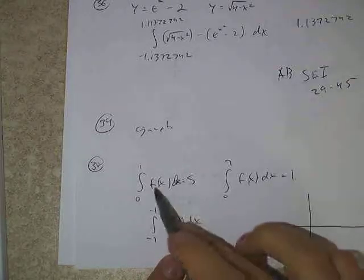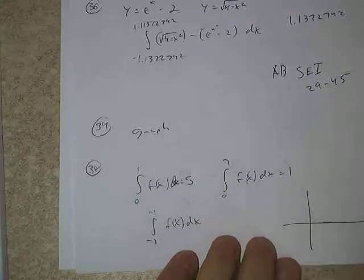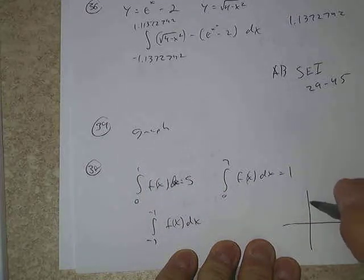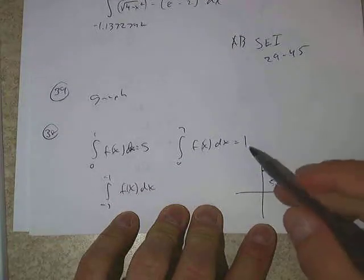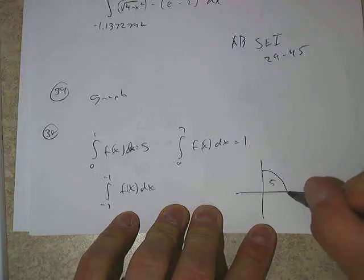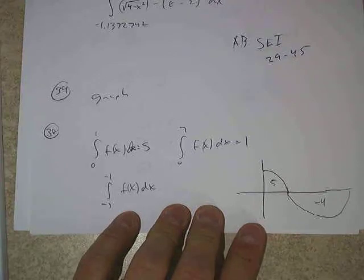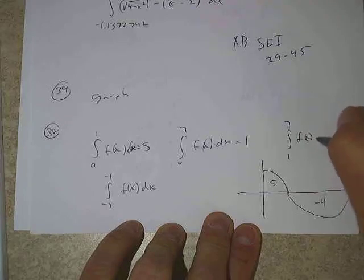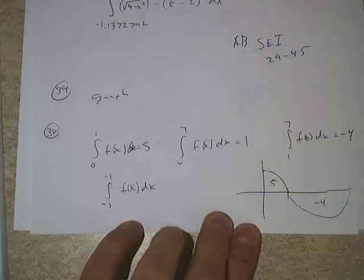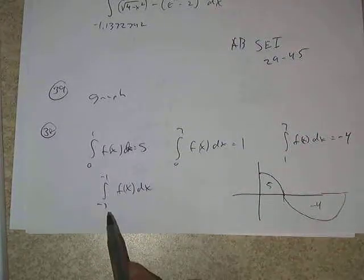Keep in mind, picture-wise: if the area from 0 to 1 is 5, and the area from 0 to 7 is 1, what does that tell me about the area from 1 to 7? If we go from 0 to 1 and that area is 5, and the total from 0 to 7 is 1, then the area from 1 to 7 would have to be negative 4, in order to make both of those true.